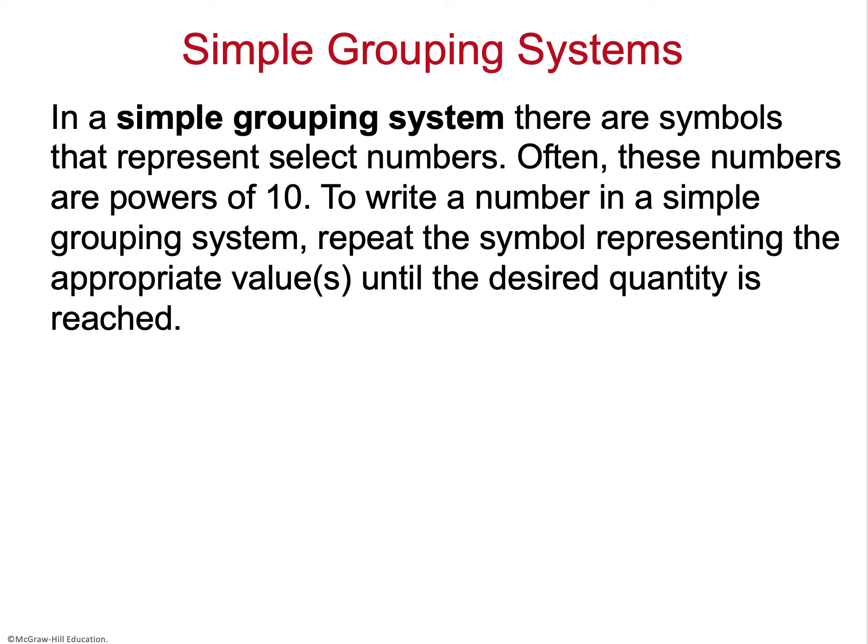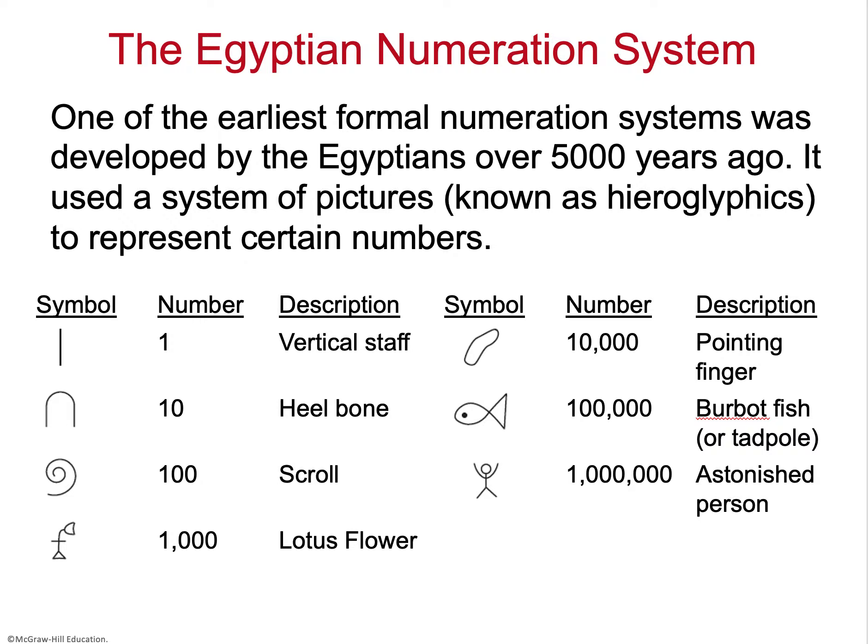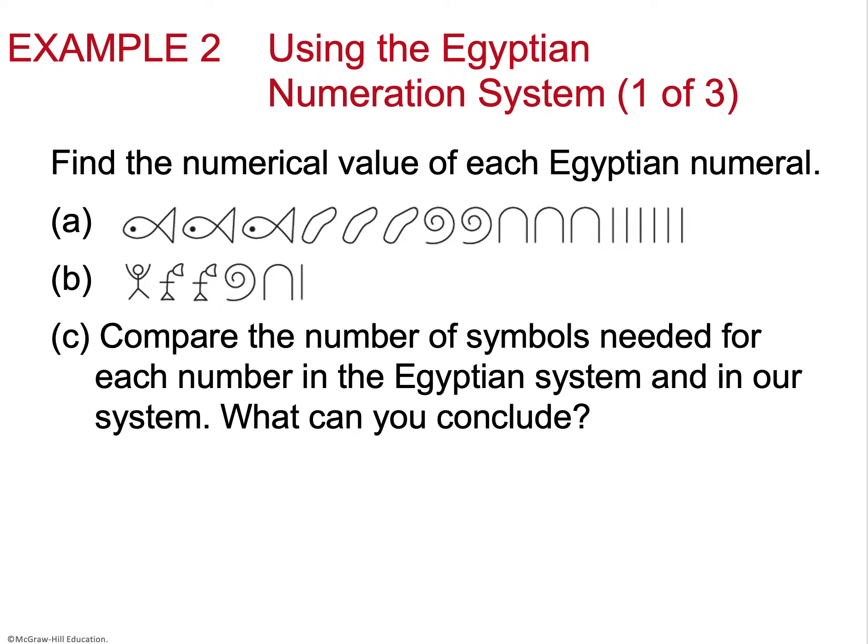In a simple grouping system, there are symbols that represent certain numbers, often powers of 10. To write a number, you repeat the symbol representing that value until you reach the desired quantity. The Egyptians are a great example: they used a slash for one, an upside-down U for ten, then symbols for 100, 1,000, 10,000, 100,000, and a million. This system was developed about 5,000 years ago using hieroglyphics.